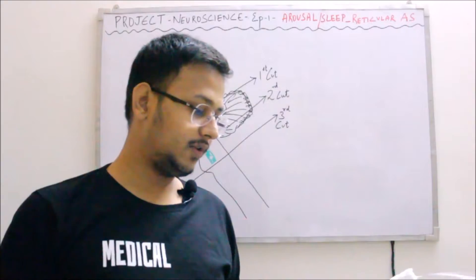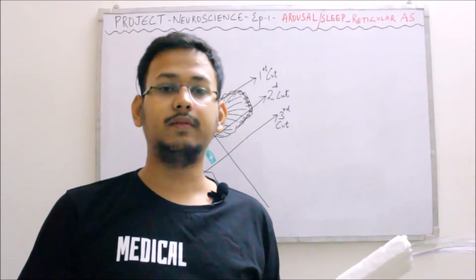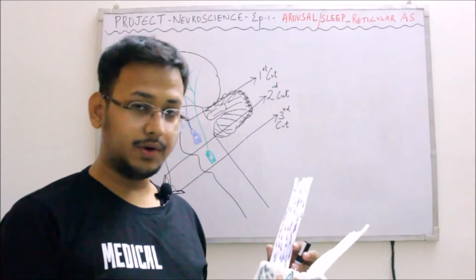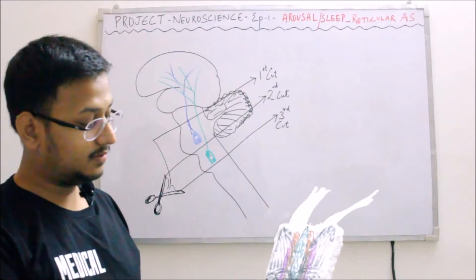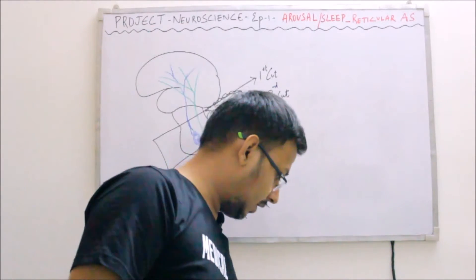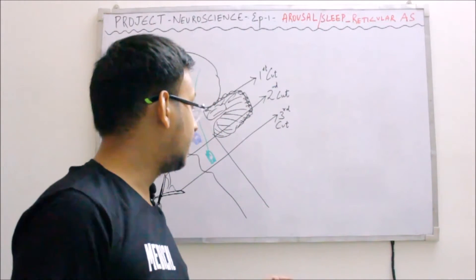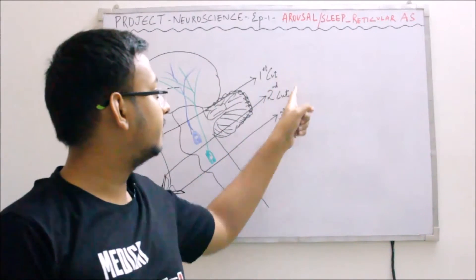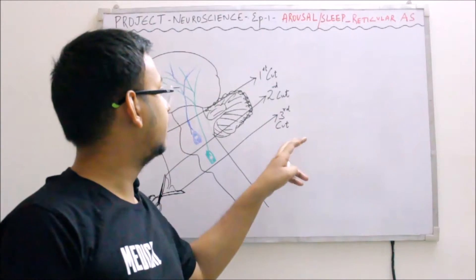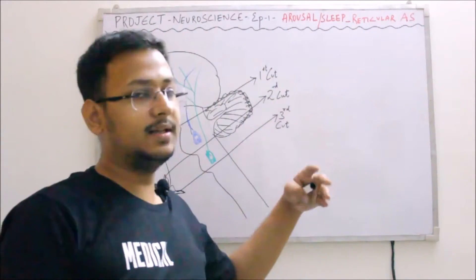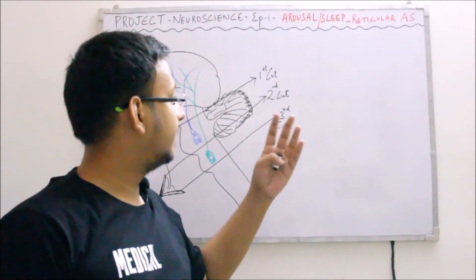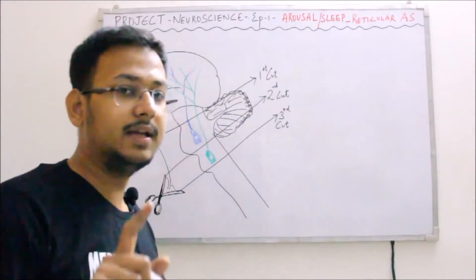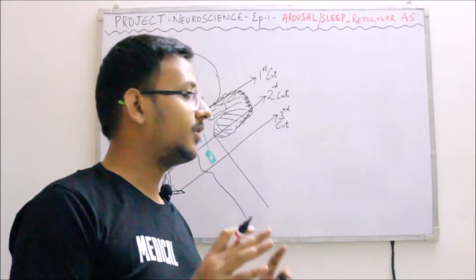We are representing this model onto the whiteboard for a clearer explanation. These are the fibers from the locus coeruleus and these are the fibers from the raphe nuclei. Frederick Bremer, the neuroscientist, performed certain experiments on the cat's brain. The cuts are named according to a descending series. Let us now see the observations, which are the cornerstone of this research.